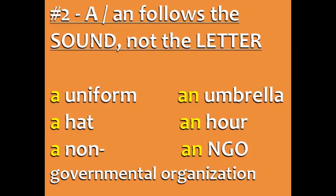But when we abbreviate it, we say 'an NGO.' Why? Because the letter N starts with a vowel sound, 'eh' — an NGO.